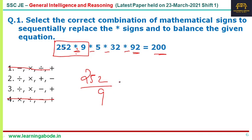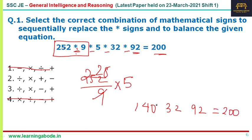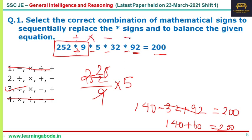252 divided by 9 is 28; 28 into 5 is 140. Then you have 32 and 92, and the output is 200. So this should be minus and this should be plus: 140 plus 60 equals 200, LHS and RHS matching. So the answer is option 3 — the sequence should be division, multiplication, subtraction, then addition to get the result of 200. Question 1 is a very easy question; answer option 3 is the answer.